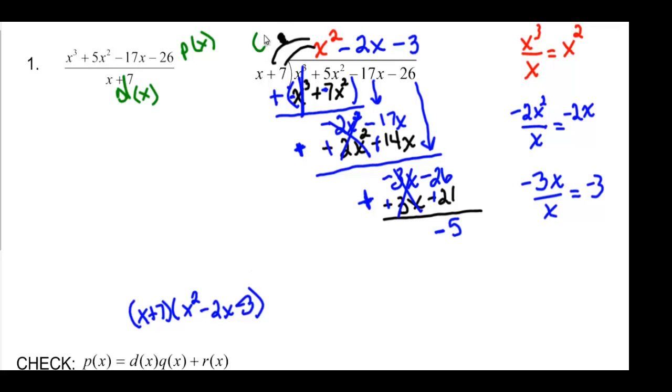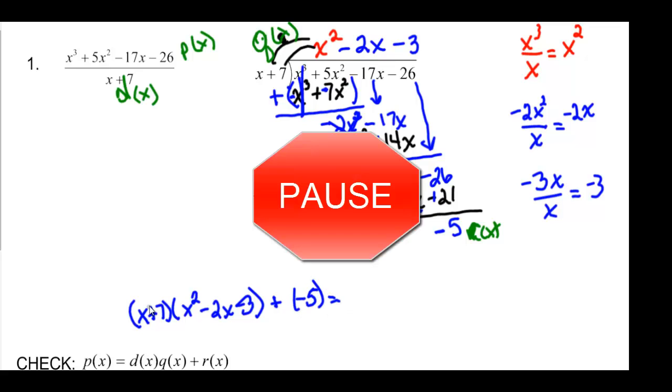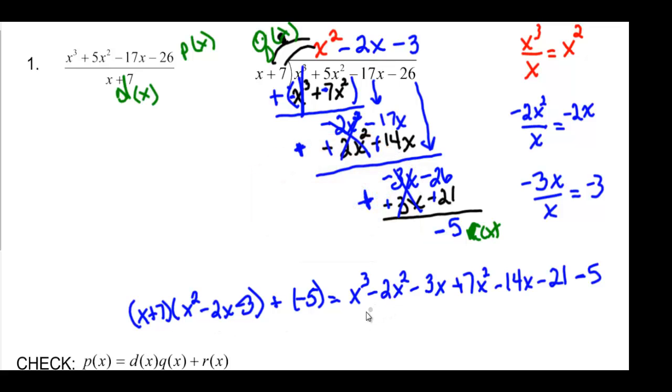Because remember, this is our Q of X and this is our R of X. D times Q plus R, which is a negative 5. And let's multiply and see what we get. Pause here to work it out while I work it out. And we get X cubed plus 5X squared minus 17X minus 26. And sure enough, that's what my P of X was.